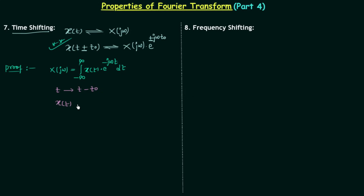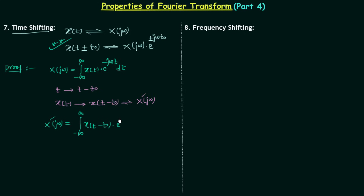Signal x(t) will now change to x(t − t0). Let's say the Fourier transform corresponding to this new signal is X(jω′). We are interested in calculating the new Fourier transform X(jω′), which equals the integral from minus infinity to infinity of the new time domain signal x(t − t0) multiplied by e^(−jωt) dt.